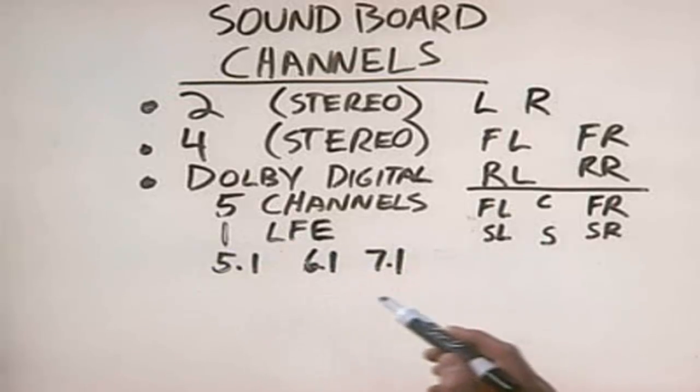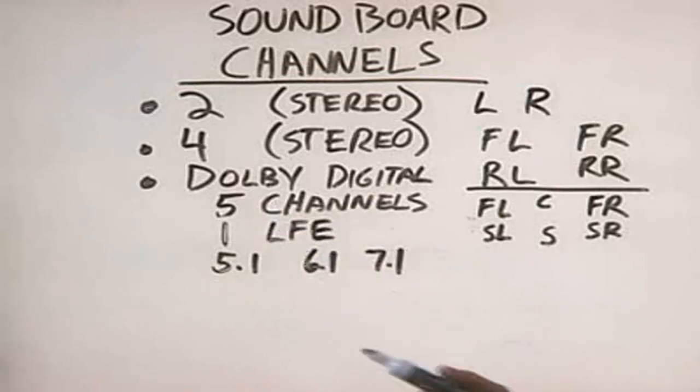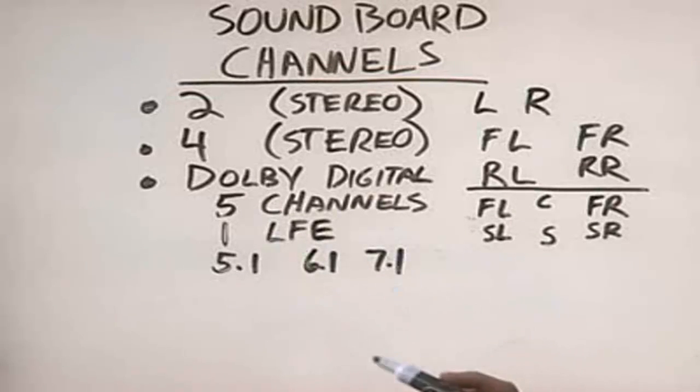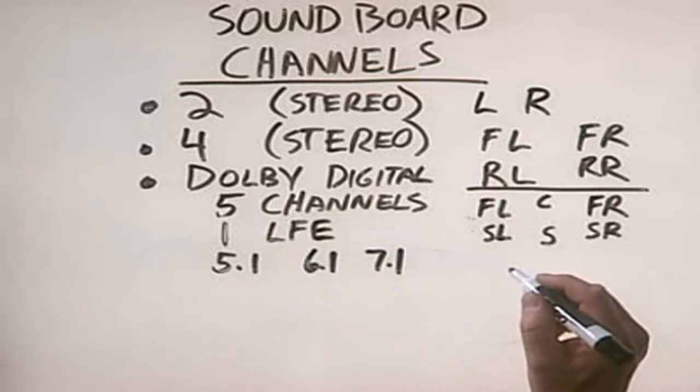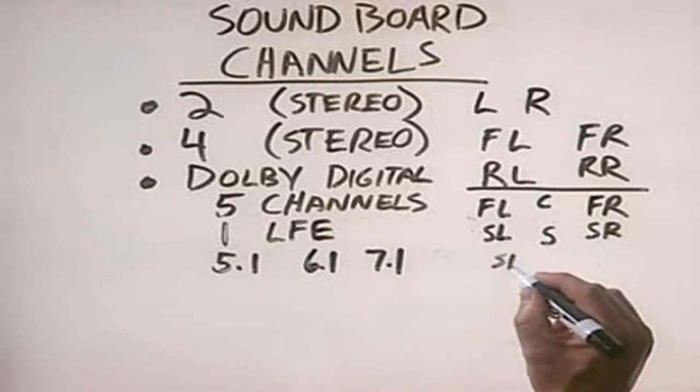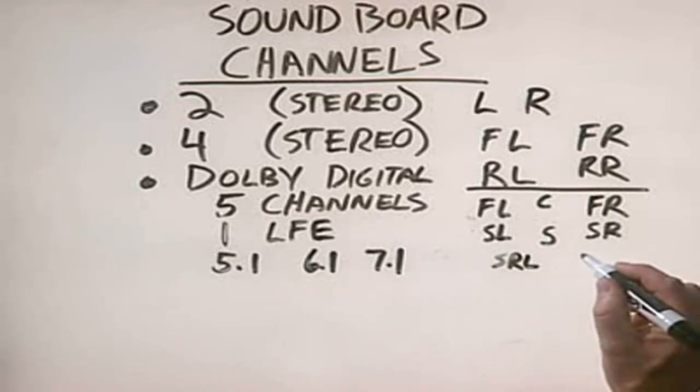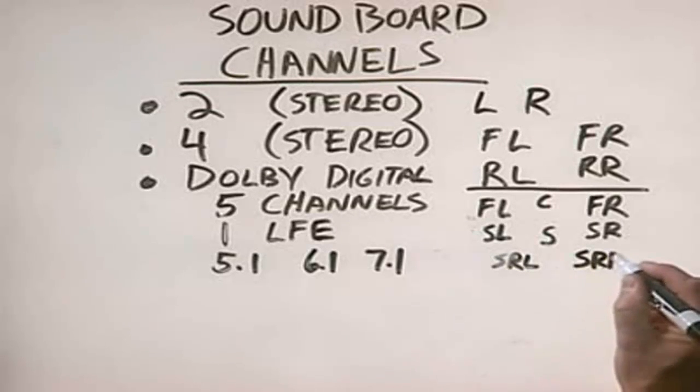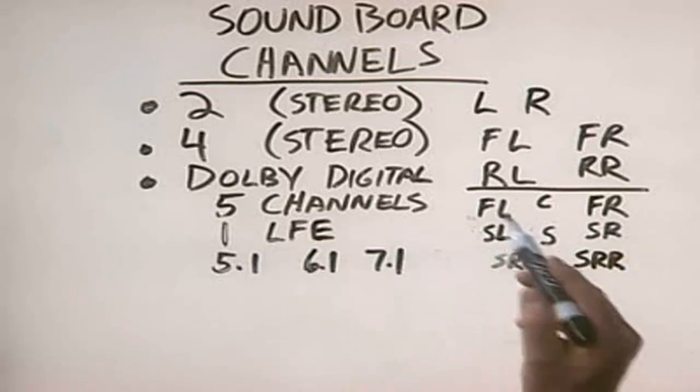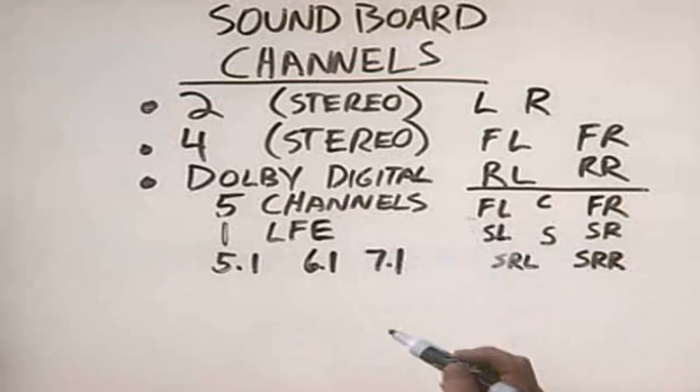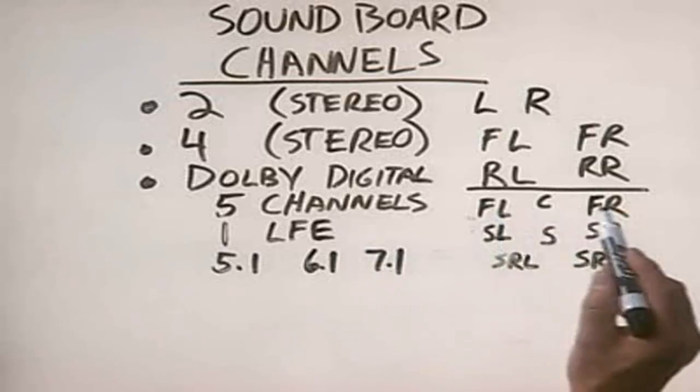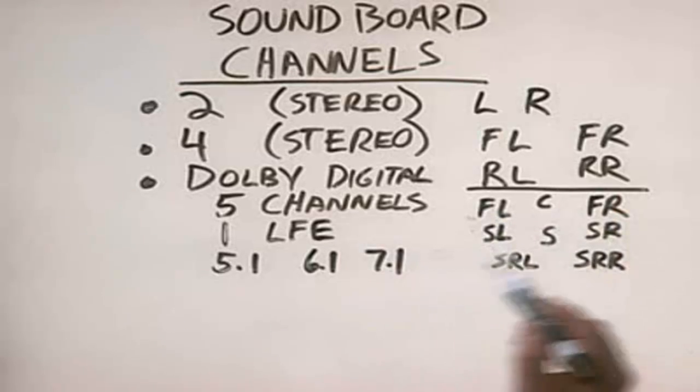The 6.1 and 7.1 version of Dolby Digital simply add more channels. For example, with the 7.1, we add our surround rear left and surround rear right channels to our original five Dolby channels. And we still have our one subwoofer channel. Therefore, it's 7.1.